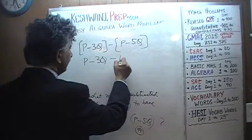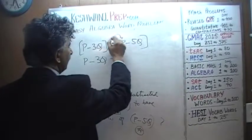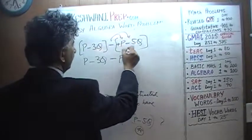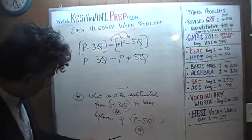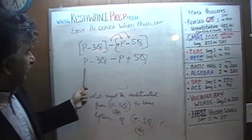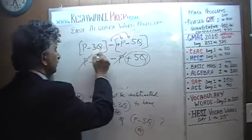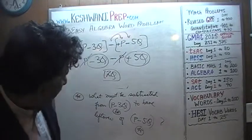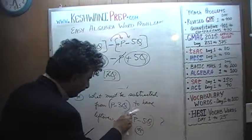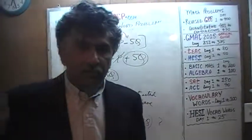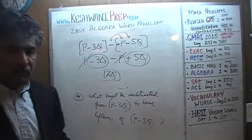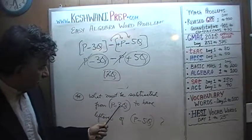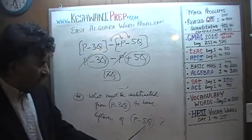So we compute (p minus 3q) minus (p minus 5q). Distributing the minus sign gives p minus 3q minus p plus 5q. The p and negative p cancel, and 5q minus 3q gives us 2q. So the answer is: one must subtract 2q from p minus 3q, and p minus 3q minus 2q equals p minus 5q — exactly what we wanted.